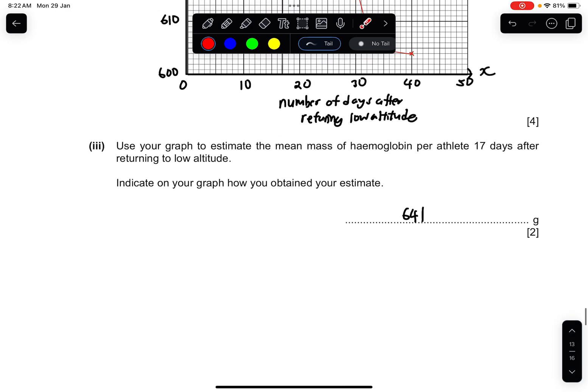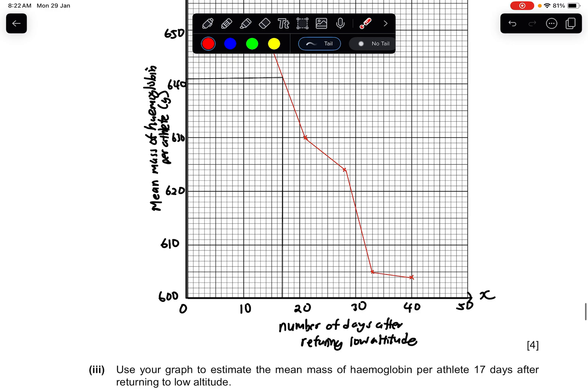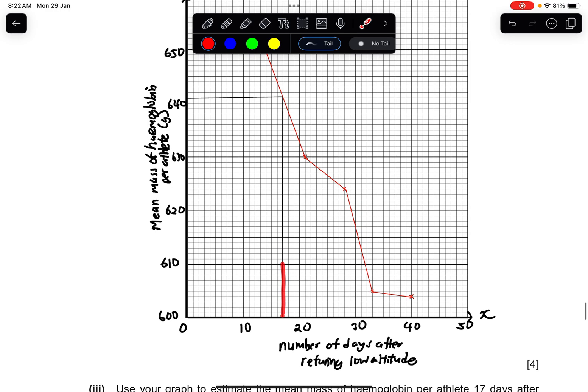Part three: Use your graph to estimate the mean mass of hemoglobin per athlete 17 days after returning to low altitude. Indicate on the graph how you obtained your estimate. 17 days, it's about here, and then here it touches this point which is about 641 grams.